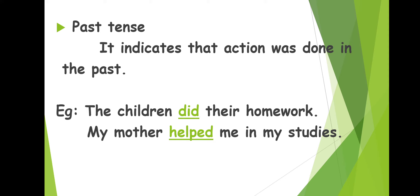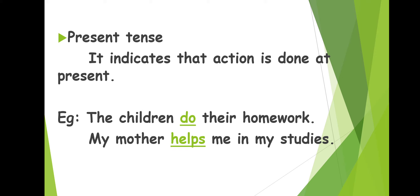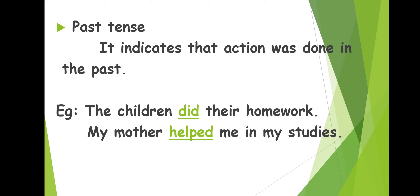The children did their homework. The action word 'did' tells us that the action happened before — 'did' is the action word which tells us that the action has been completed. In the next sentence, 'My mother helped me in my studies' — the action word 'helped' tells us that the action has happened before. So if it's present tense, it's 'do'; in past tense, it's 'did'. If it's present tense, it's 'helps'; in past tense, it's 'helped'.